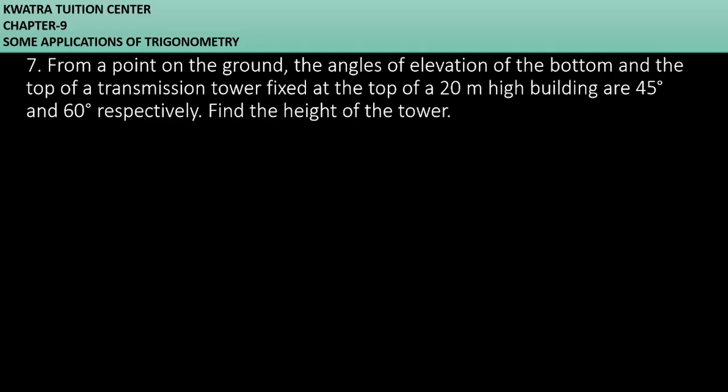Let's start with question number 7. It says from a point on the ground, the angle of elevation of the bottom and top of the transmission tower fixed at the top of a 20 meter high building are 45 degrees and 60 degrees respectively.